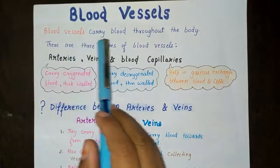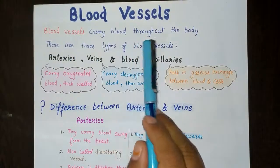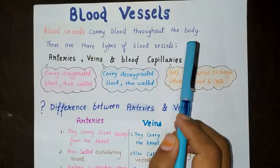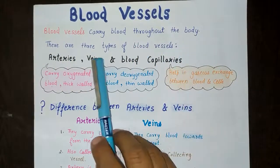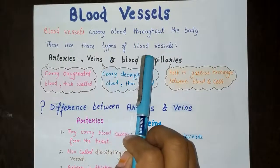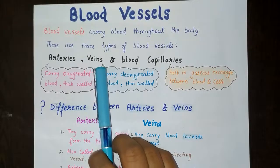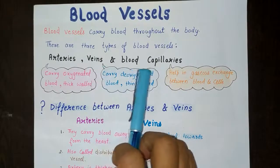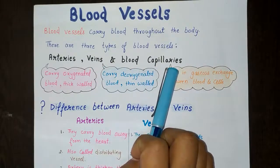Blood vessels carry blood throughout the body. There are three types of blood vessels: arteries, veins, and blood capillaries.